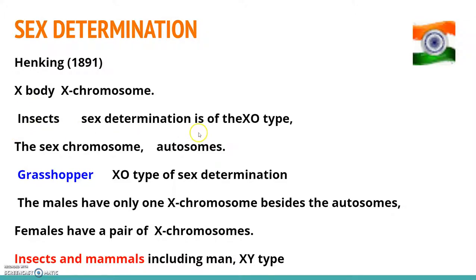In a large number of insects, sex determination is of the XO type. All eggs bear an additional X chromosome besides the autosomes. On the other hand, some sperms bear the X chromosome whereas some do not. Eggs fertilized by sperm having an X chromosome become females, and those fertilized by sperm without an X chromosome become males.